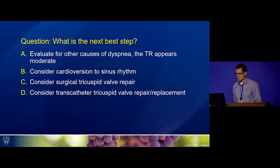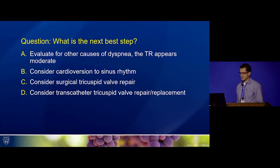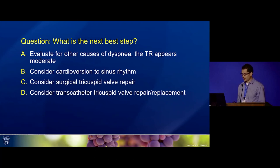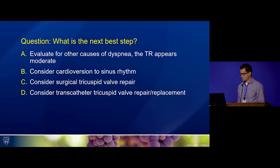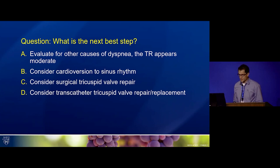The next question: what is the next best step? Should we A, evaluate for other causes of dyspnea; B, consider cardioversion given the patient is in AFib; C, consider surgical tricuspid valve repair; or D, consider transcatheter tricuspid valve repair or replacement?